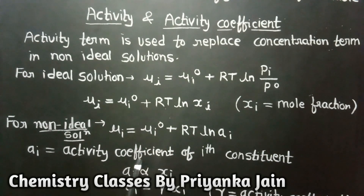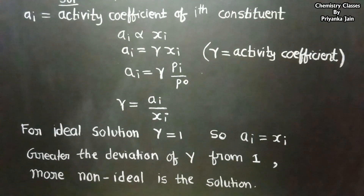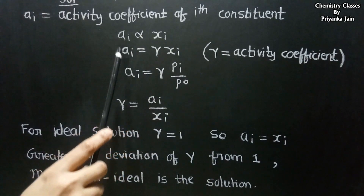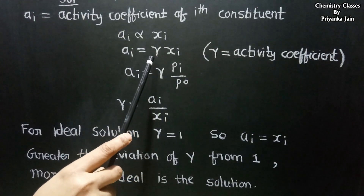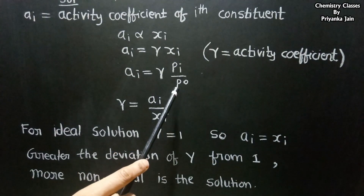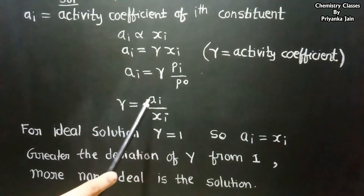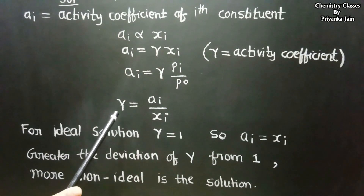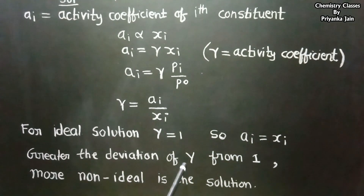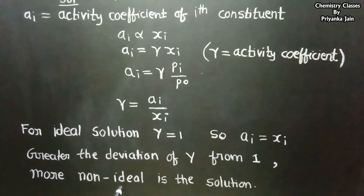Comparing the two equations, activity is directly proportional to the mole fraction. We can write: a_i = γx_i, where γ is a constant called the activity coefficient. Substituting, we get a_i = γ(p_i / p⁰). From this, γ = a_i / x_i. For ideal solutions, the activity coefficient γ = 1, so activity equals concentration. The greater the deviation of γ from 1, the more non-ideal the solution. For ideal solutions, γ = 1 and activity equals concentration.